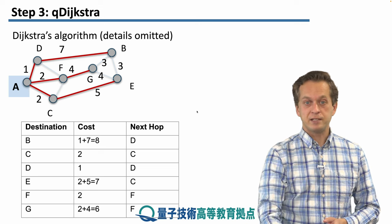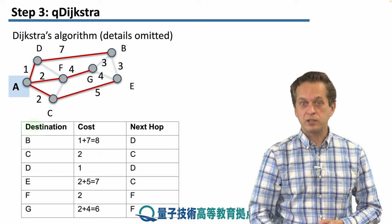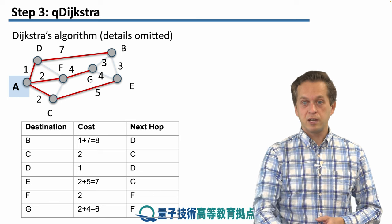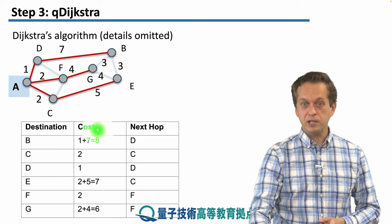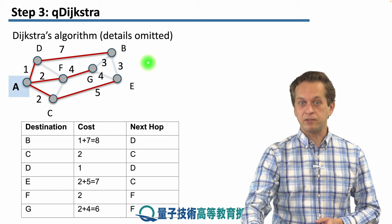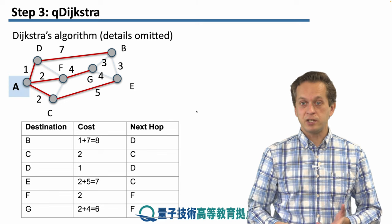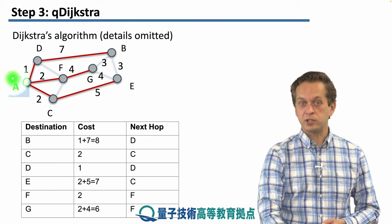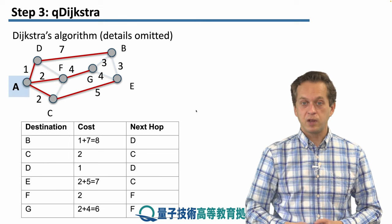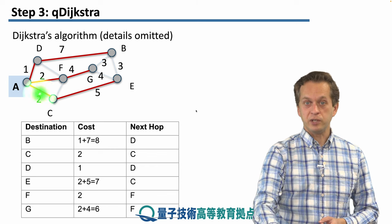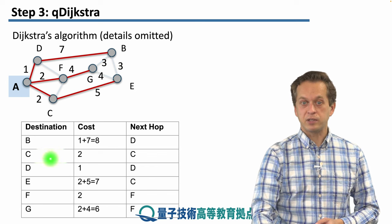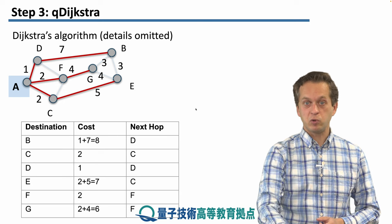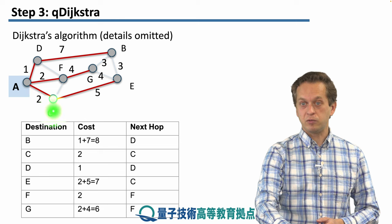For example, if the destination is B, then it knows that the shortest path — shortest meaning with the smallest cost — leads through D, and the total cost is 1 plus 7. If it tries to reach C, which is its neighbor, it knows that the link cost associated with reaching C is just 2. If it's trying to reach node E, then it computes that the best, smallest path cost is 2 plus 5, and it knows it needs to forward the packet to C.